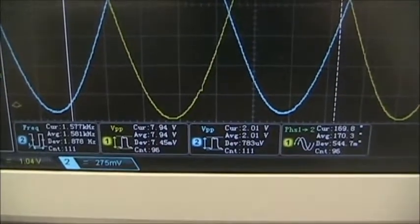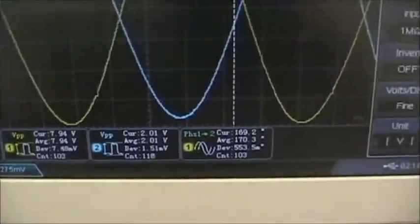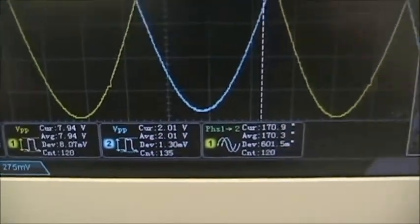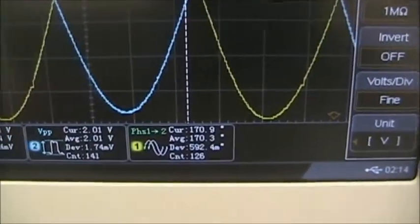If I see the values, which you should record, we see 1.582 kilohertz. That's not critical. But we see the output of the first op amp is 7.94 volts, and the input is 2.01.